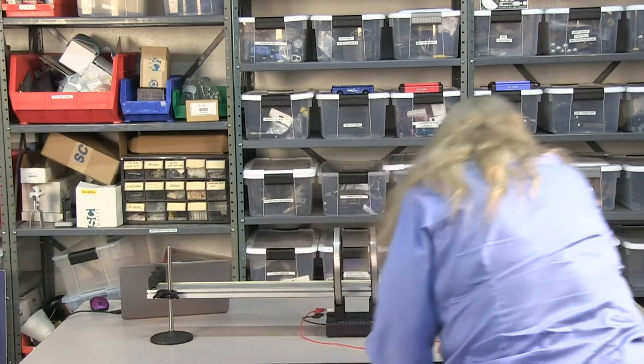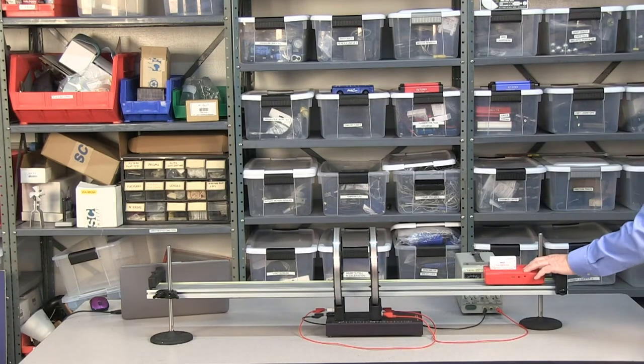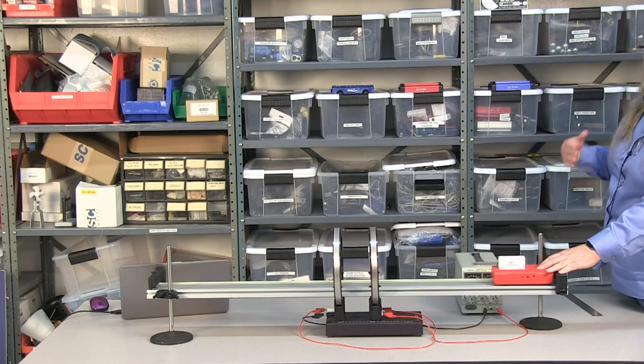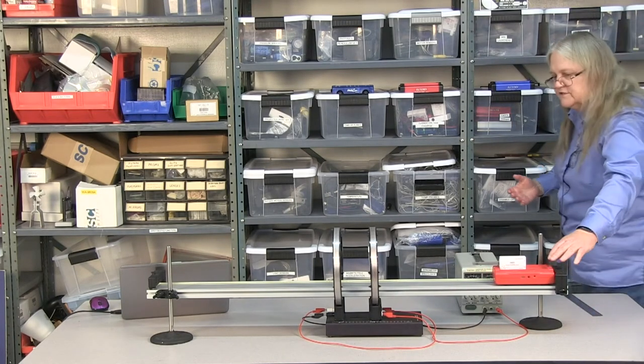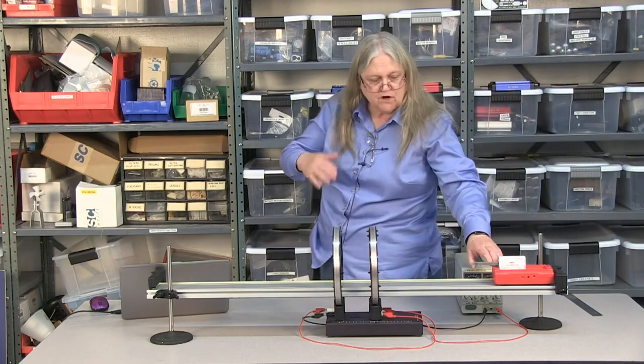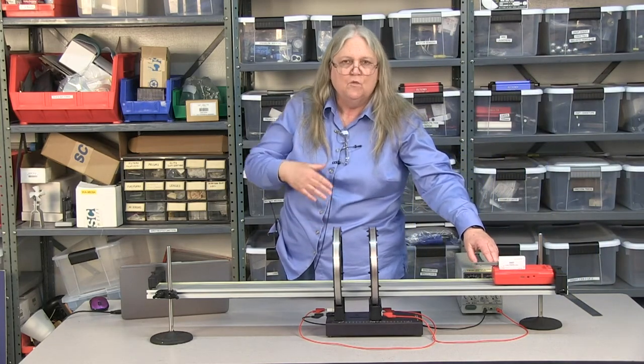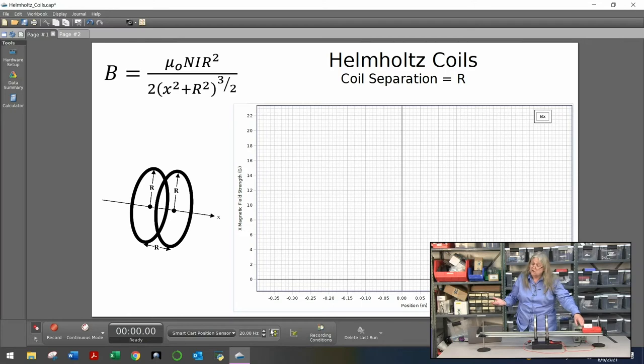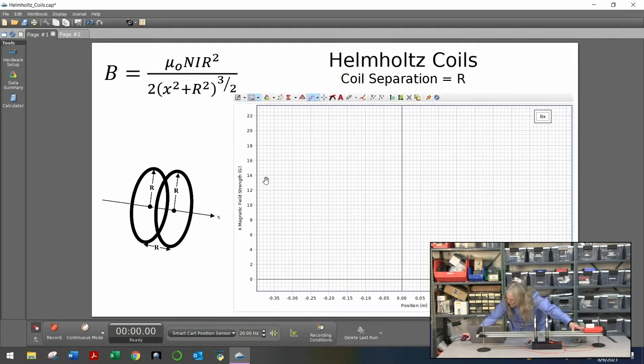So that should be zero. Now, the nice thing about it is that in the software, you can tell the software I don't want it to zero again, the smart cart to zero again, when you start recording. I haven't started recording yet, but it already knows where we set the zero. So we're going to leave that zero on and then I'm just going to roll the cart through and plot the magnetic field versus position.